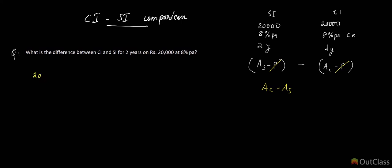Rs. 20,000 × 1.08², while the amount under SI is Rs. 20,000 × 1.16 (since 8% per annum for